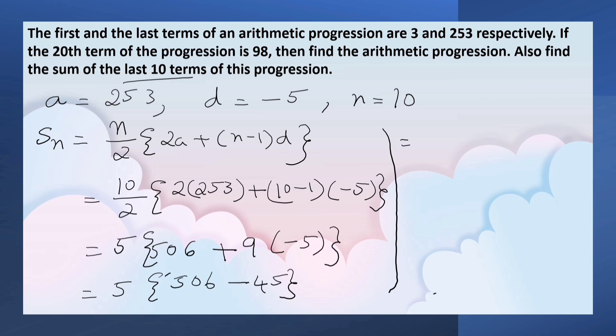That equals 5 times 506 minus 45. That equals 5 times 461. Computing: 5 times 1 is 5, 5 times 6 is 30 carry 3, 5 times 4 is 20 plus 3 equals 23. So the sum of the last 10 terms is 2305.